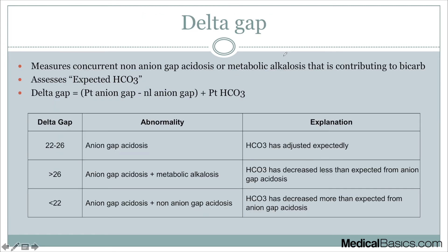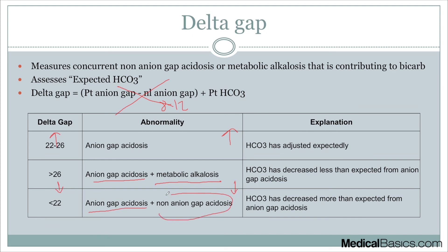The delta gap is based on: patient's anion gap minus normal anion gap (roughly 8 to 12). Conceptually, I like to think of the delta gap as assessing our expected bicarb. If we have a high delta gap, we're going to have a higher-than-expected bicarb, meaning something else is causing more bicarb — a metabolic alkalosis contributing alongside our anion gap acidosis. Conversely, a low delta gap means lower-than-expected bicarb — something else is driving bicarb down, causing an additional non-anion gap acidosis on top of the existing anion gap acidosis.